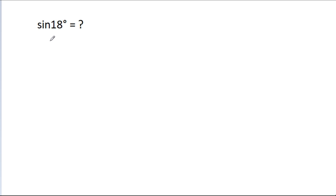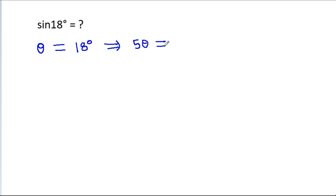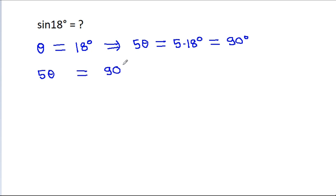In this video, we have to find the value of sin 18 degrees. Suppose θ is equal to 18 degrees, then 5θ will be equal to 5 times 18 degrees, that is 90 degrees. So 5θ is equal to 90 degrees, and 5θ is 2θ plus 3θ, that is equal to 90 degrees.